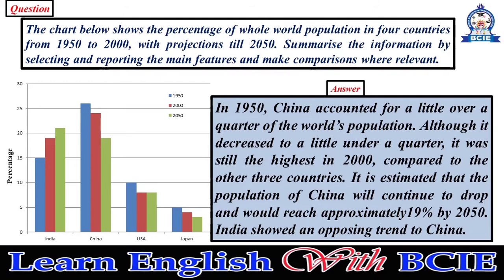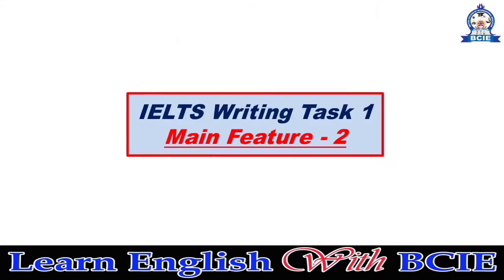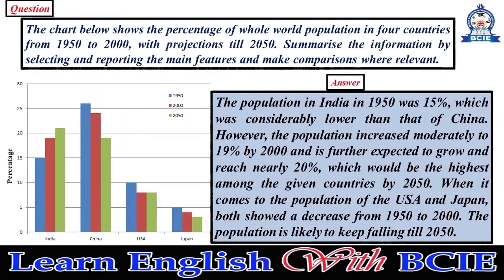India showed an opposing trend to China. The population in India in 1950 was 15 percent, which was considerably lower than that of China. However, the population increased moderately to 19 percent by 2000, and is further expected to grow and reach nearly 20 percent, which would be the highest among the given countries by 2050.